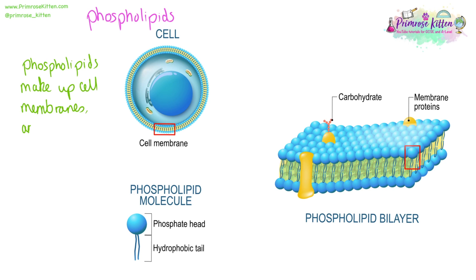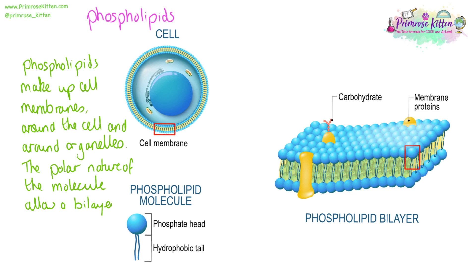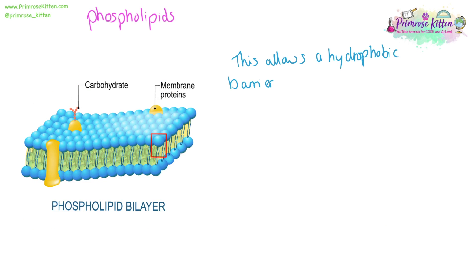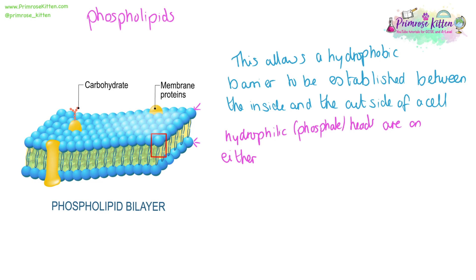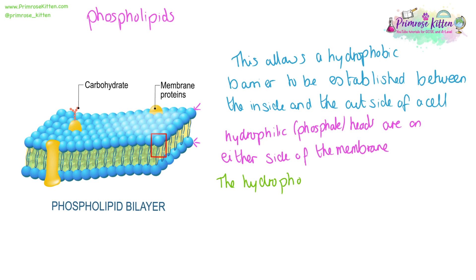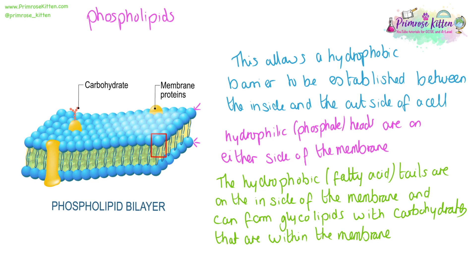Phospholipids make up the cell membranes — the membranes around cells and also the membranes around individual organelles within the cells. The polar nature of the phospholipids allows the molecule to form a bilayer, allowing a hydrophobic barrier to be established between the inside and the outside of cells. The hydrophilic phosphate heads are on the outside, on either side of the membrane, while the hydrophobic fatty acid tails are internal to the membrane. These can form glycolipids with the carbohydrates that are part of the membrane.